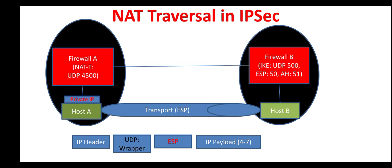Once the IPsec packet reaches the other firewall, that firewall unwraps the UDP wrapper and then processes the IPsec packet to deliver it to host B.